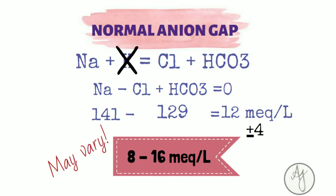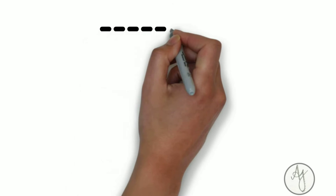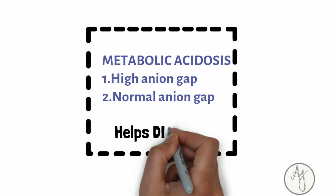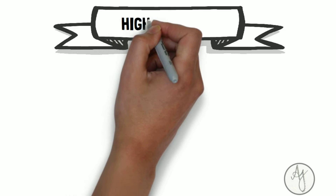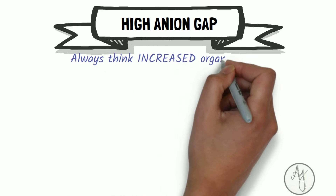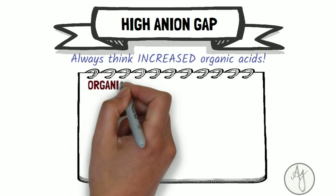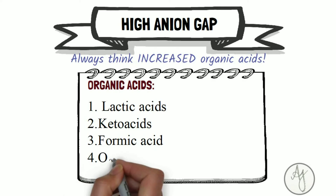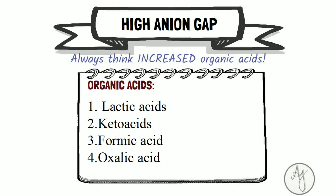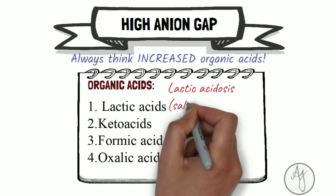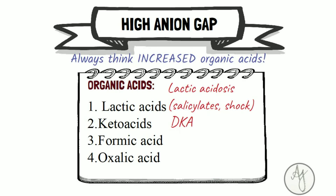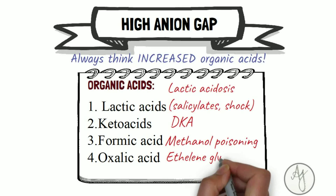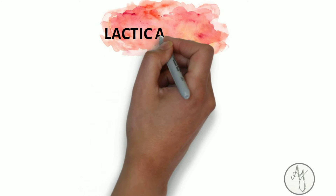Anion gap is useful in classifying metabolic acidosis as high anion gap or normal anion gap, helping identify the cause. For high anion gap, think increased organic acids in the bloodstream. Examples include lactic acid, keto acids, formic acid (a metabolite of methanol), and oxalic acid (a metabolite of ethylene glycol). Conditions causing these include lactic acidosis, DKA, methanol poisoning, and ethylene glycol poisoning.